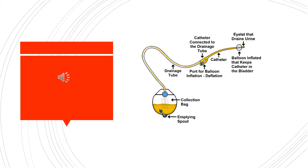A Foley catheter is a thin, sterile tube inserted into the bladder to drain urine. Because it can be left in place in the bladder for a period of time, it is also called an indwelling catheter. It is held in place with a balloon at the end, which is filled with sterile water to prevent the catheter from being removed from the bladder. The urine drains through the catheter tube into a bag, which is emptied when full.